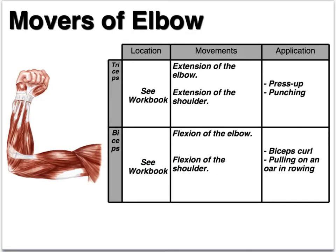Muscles of the elbow: we have the triceps on the back and the biceps on the top, and they work as a pair. The bicep creates flexion of the elbow and flexion of the shoulder, and the tricep creates extension of the elbow and extension of the shoulder.